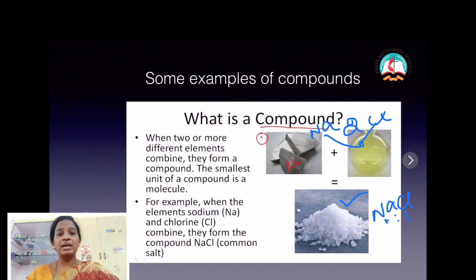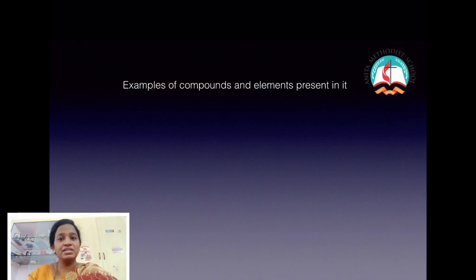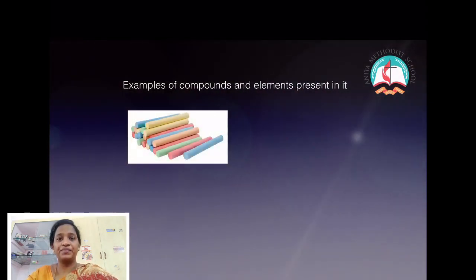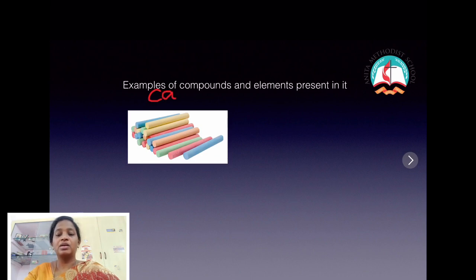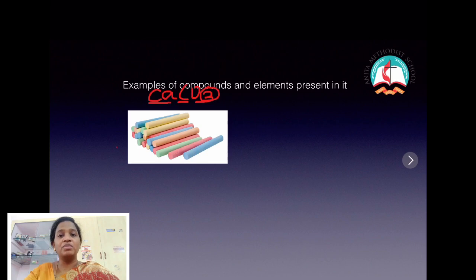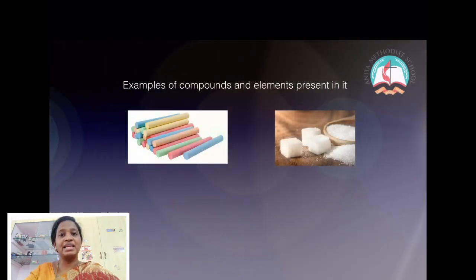Let's see some more examples of compounds and the elements present in them. The first example is chalk. Chalk is a combination of three elements, namely calcium, carbon, and oxygen — one atom of calcium, one atom of carbon, and three atoms of oxygen. All three elements combine chemically to form a compound called chalk, or calcium carbonate.